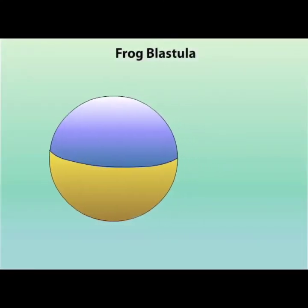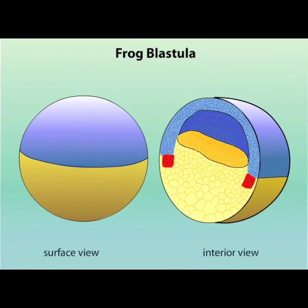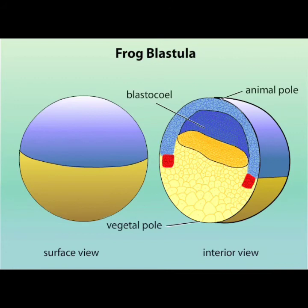If we look at a cross-section of an embryo of the frog Xenopus, we can see that at this point it is a ball of cells with a fluid-filled cavity. The cavity is the blastocele and the embryo is currently in the blastula stage of development. A blastula contains large yolk-filled cells at the vegetal pole and smaller cells at the animal pole.